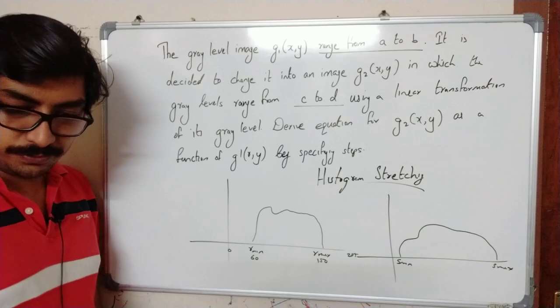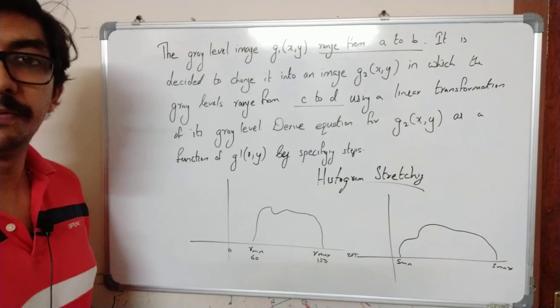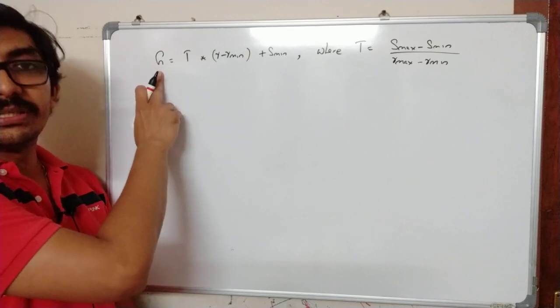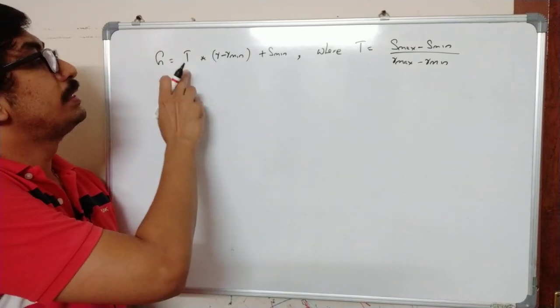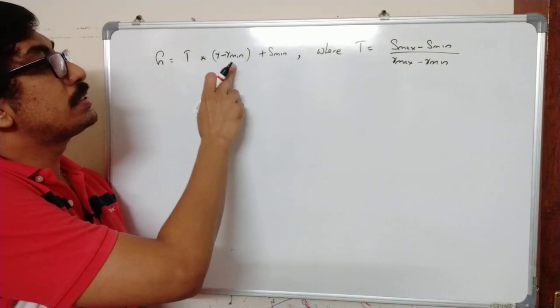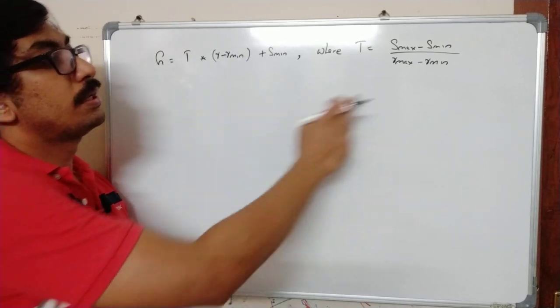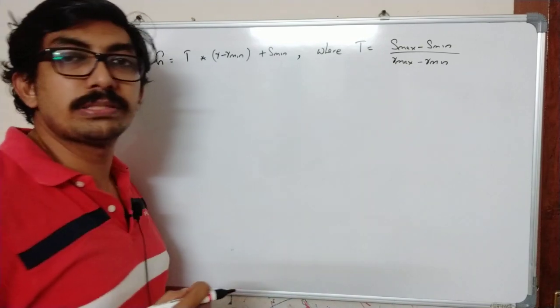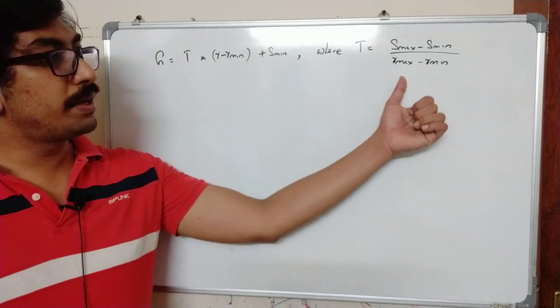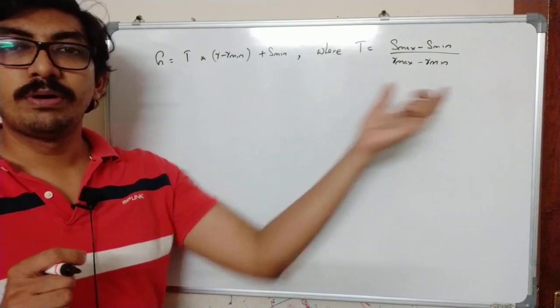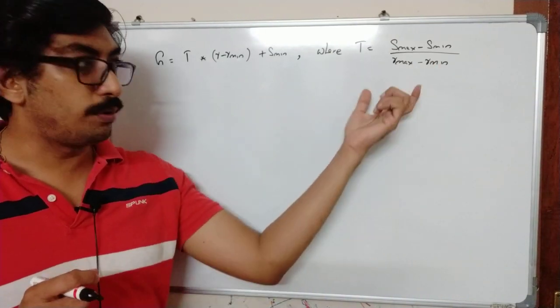So the function is like this. The function used is: the new function Z equals T times (R minus R min) plus S min, where T is a transformation that is (S max minus S min) divided by (R max minus R min).